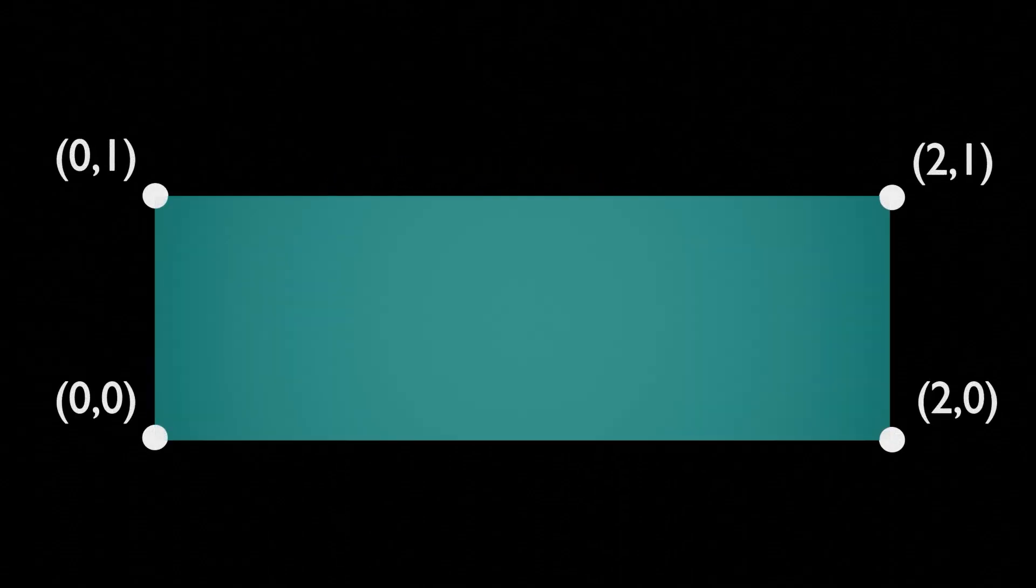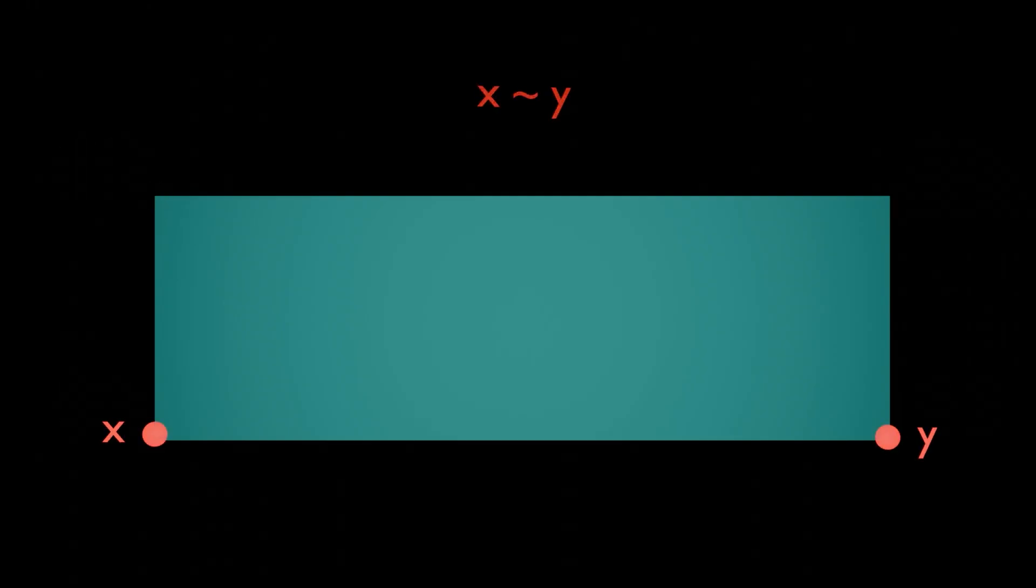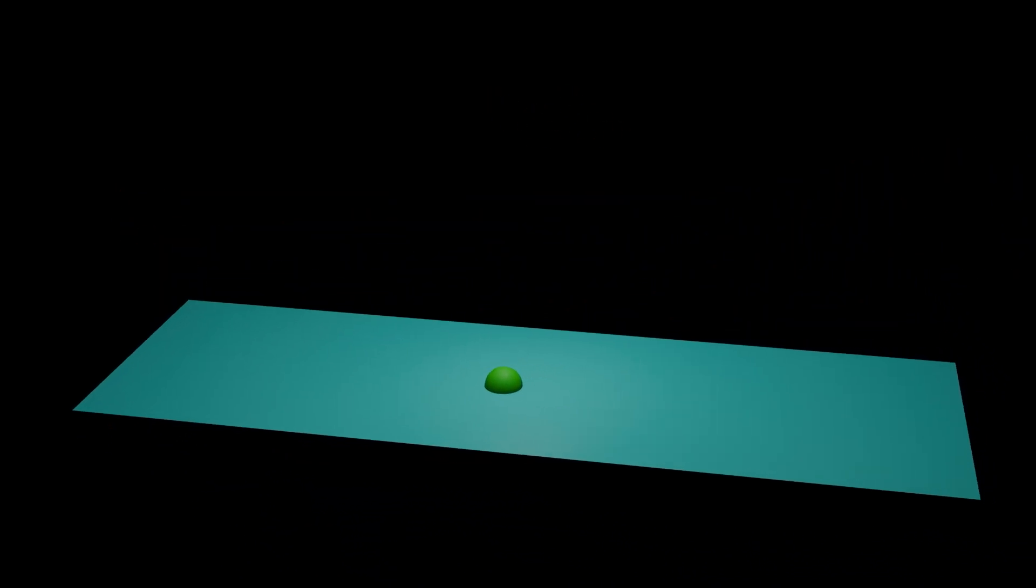Now imagine a blue strip of paper on a grid. Take two points on the edges of the strip, and let's say that these points are related to each other, and to no other points. Let's repeat this process for every pair of points as we walk up along the edges of the strip. Every other point on the strip will be related only to itself as before.